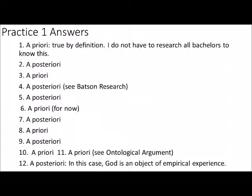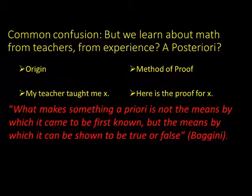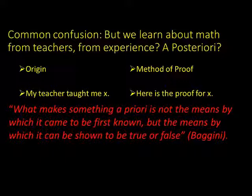Some people get confused because we learn about triangles from math teachers and math classes — we learn about triangles from experience — and therefore think math should be a posteriori. But this is a confusion between origin and method of proof. What makes something a priori is not the means by which it came to be first known, but the means by which it can be shown to be true or false. We may need experience to furnish ourselves with the concept of a triangle, but once we have that concept we don't need experience to determine what the properties of triangles are. A priori knowledge is distinguished by its method of proof, not by how we came to acquire it.